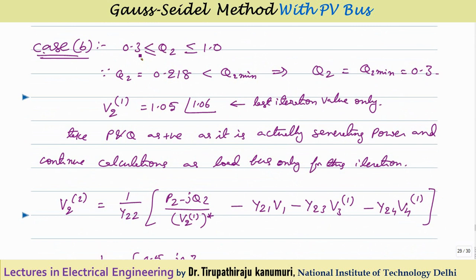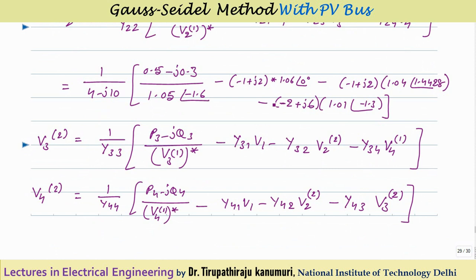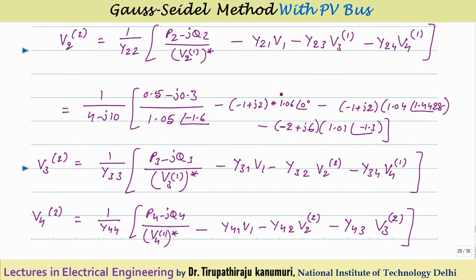For Case 2, Q limits are 0.3 to 1.0. Since Q2 = 0.218 < 0.3, it violates the lower limit. Therefore, set Q2 = Qmin = 0.3. In this case, take V2 as its actual first-iteration value (1.05∠1.6°) without replacing the magnitude with the specified value. Calculate V2(2) using this actual voltage. The obtained V2 is used as-is without magnitude replacement, because taking the specified voltage caused the reactive power limit to be violated.